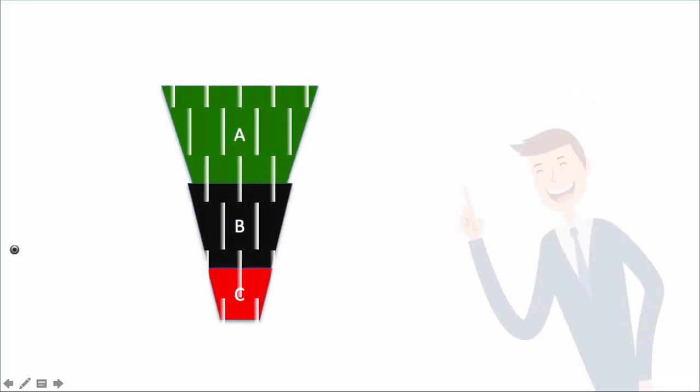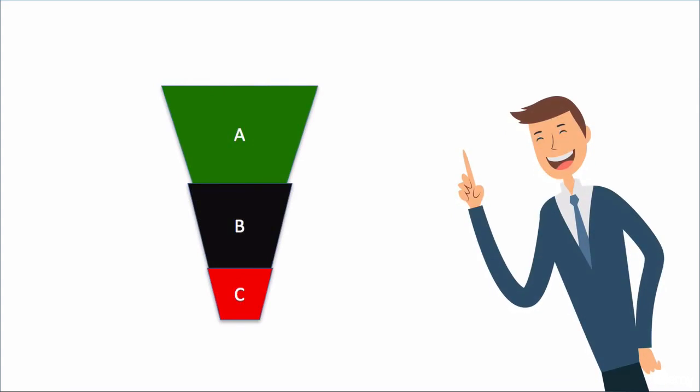I have created a system on LinkedIn. I call this the ABC system. A stands for attract the right type of connections. B stands for building relationships and building your brand on LinkedIn. And C stands for how to convert and sell to those connections. That's exactly what we are going to cover in this course.